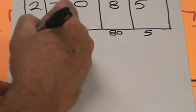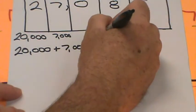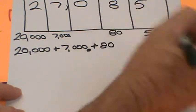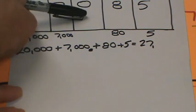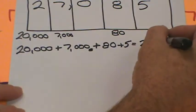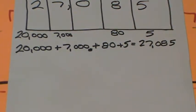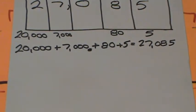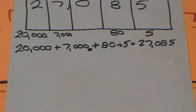Let's do expanded form first. Following like a map: twenty thousand plus seven thousand plus eighty plus five. What does that equal? Well, it equals twenty-seven thousand eighty-five. We have to remember the zero — it's eighty-five, so we write zero eight five. That gives us twenty-seven thousand eighty-five — not twenty-seven thousand AND eighty-five.